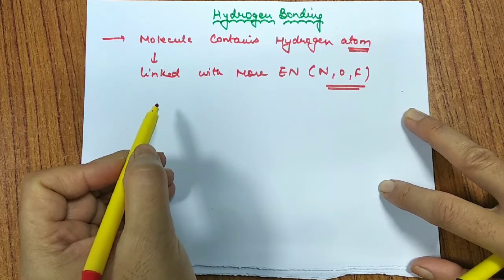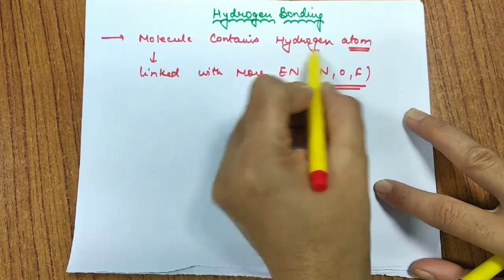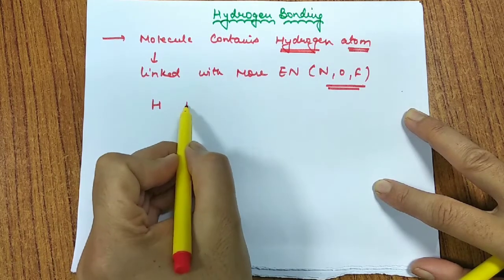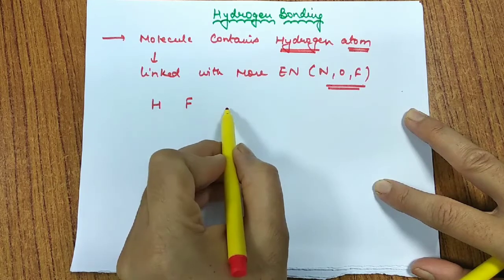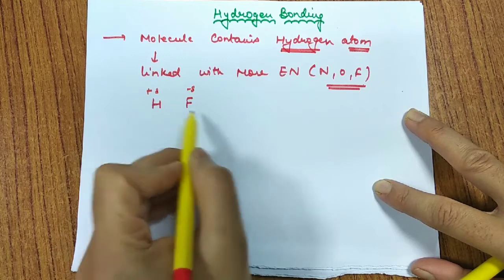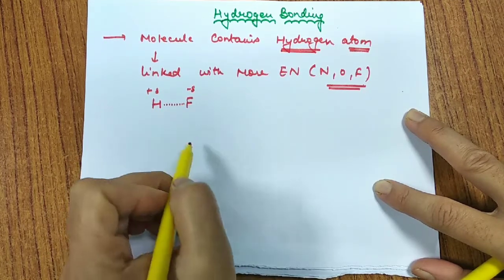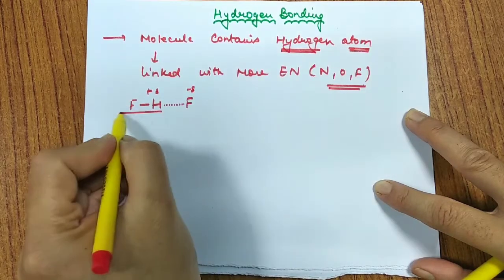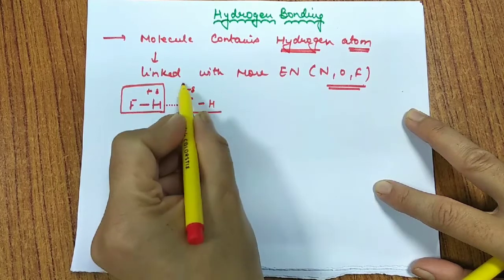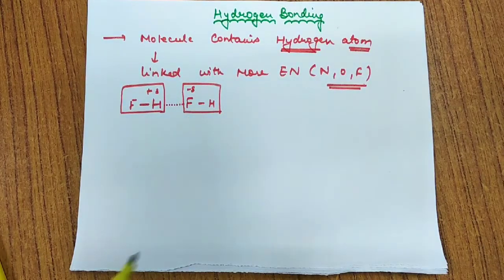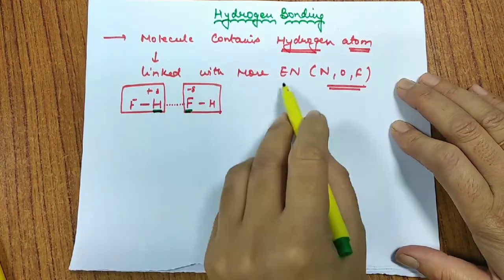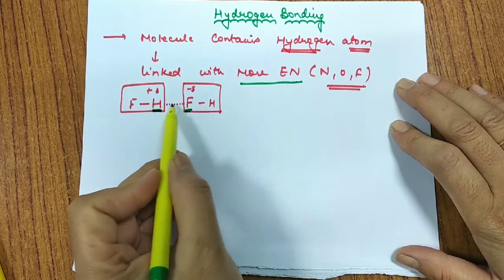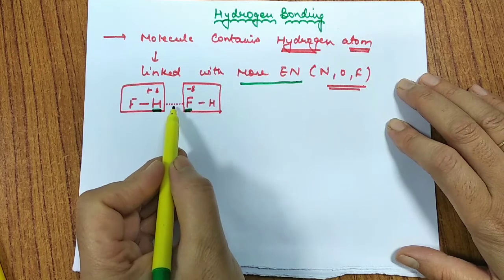So the end of the molecule becomes highly negative while the other end becomes positive. Any molecule containing Hydrogen bonded with a more electronegative atom of another molecule acquires partial negative and partial positive charge. There is a force of attraction that holds the molecules together. This bond is represented by a dotted line. The molecule showing Hydrogen bonding must have Hydrogen linked with a more electronegative atom — Nitrogen, Oxygen, or Fluorine.